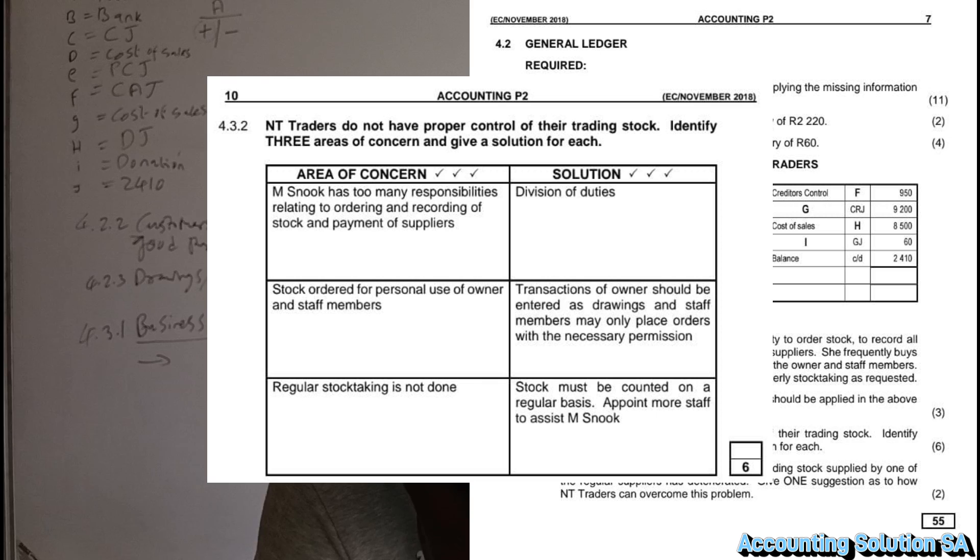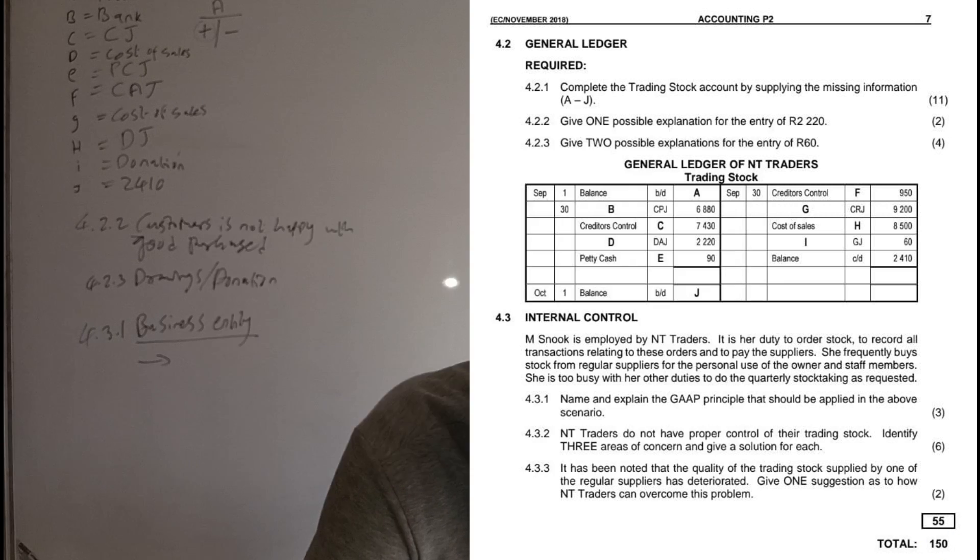And the last question: it has been noted that the quality of the trading stock supplied by one of the regular suppliers has been deteriorated. Give one suggestion as to how NTK traders can overcome this problem. Obviously, if they are not happy with the supplier, they must first discuss with their supplier or they have to find another better supplier with a better quality.